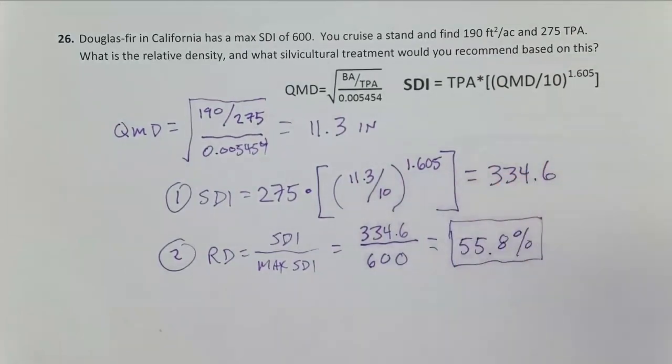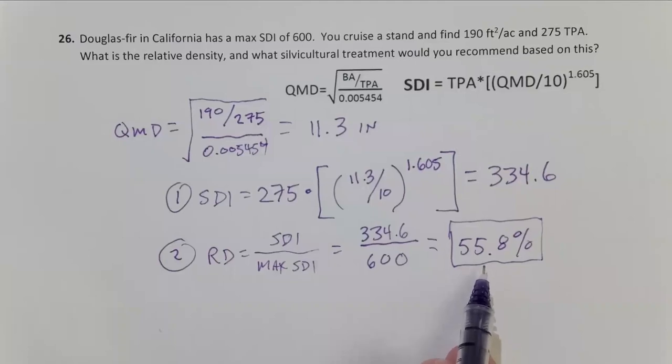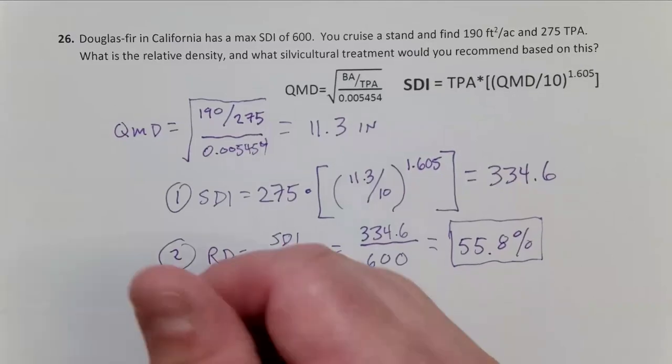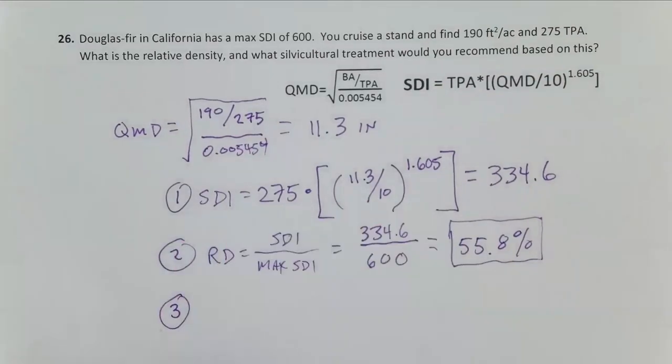Now, I don't have what the management zone is for Douglas fir in California. That 30 to 45 percent, remember, is for Southern Yellow Pine here in the U.S. South, so that may not apply, but it doesn't matter. For just about any species, when you hit 50 to 60 percent relative density, you're anticipating self-thinning and density-related mortality.